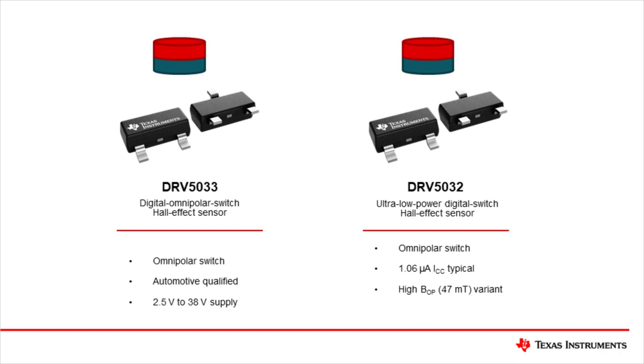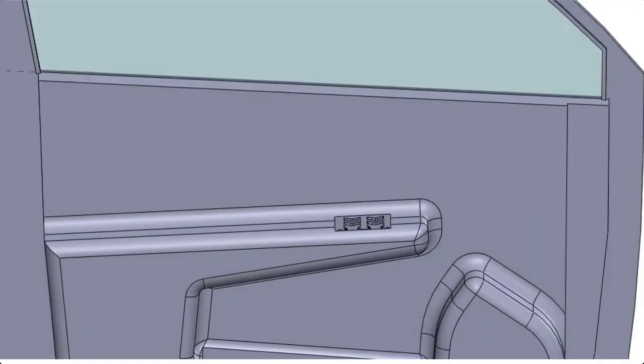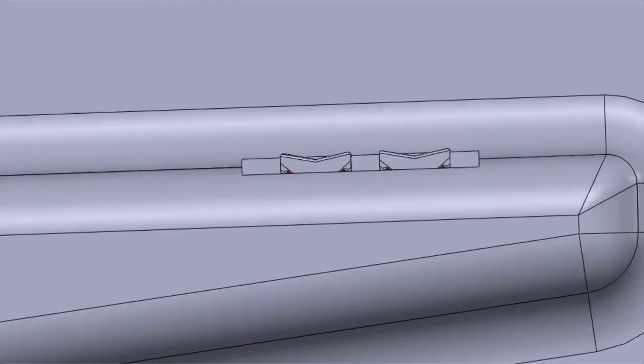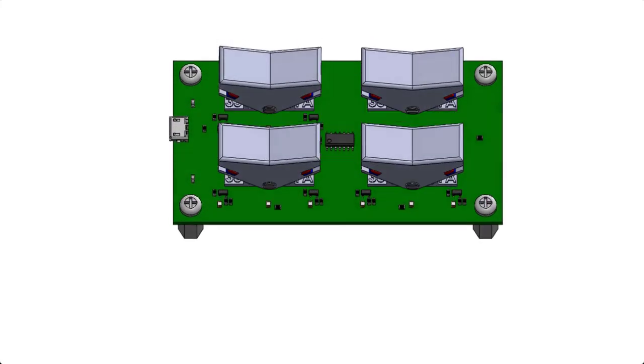To start our design, we begin with the system function and where it is housed. In this case, we are looking at a tri-state switch similar to what you might find for raising and lowering car power windows. These switches are typically housed in the armrest of a car door.